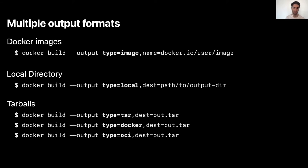BuildKit also supports outputs other than Docker images. You can produce Docker images obviously, but you can also use what they call local output — a way to export a specific set of files from your build environment to the host where you run the build. That's the output we use to produce any kind of artifacts like binaries. You can also produce tarballs with three types: tar (similar to local output but archived), Docker, and OCI types to produce Docker image tarballs or OCI image tarballs.